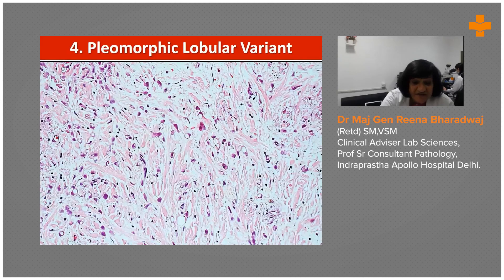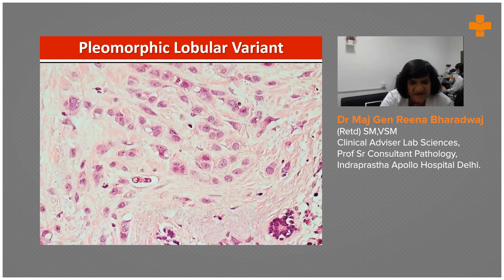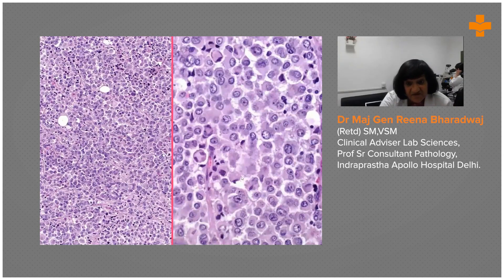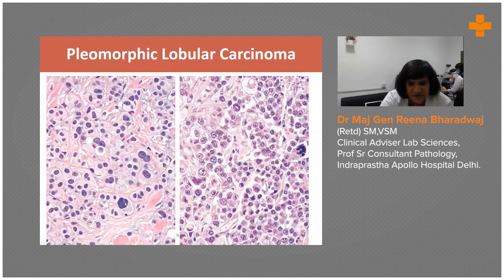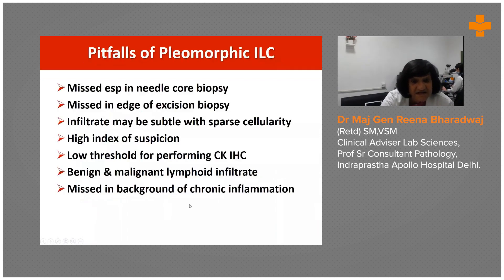The pleomorphic variant shows intracytoplasmic vacuoles, but the cell size is rather large and can look bizarre. At high power, intracytoplasmic vacuoles are present, but some cells have prominent nucleoli and appear quite large — this is pleomorphic invasive lobular carcinoma. Cells can look plasmacytoid, bizarre, with more mitoses than normal. In such cases, look for intracytoplasmic lumina, apocrine differentiation, and foci of LCIS. This variant has an aggressive clinical course and must not be missed on core or excision biopsy.